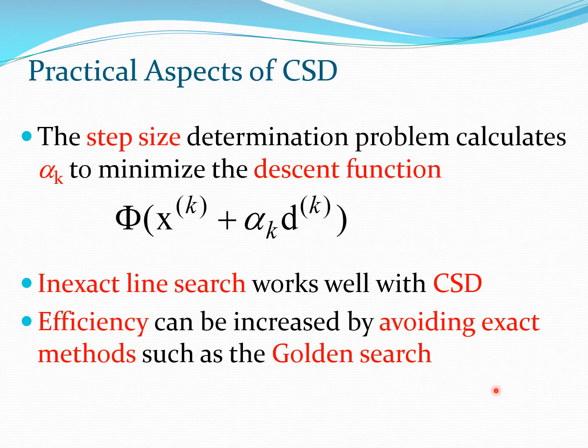Now what you need to do is calculate how much you need to move in this search direction calculated by the QP sub-problem. Again recall the one-dimensional search where this is specified by alpha subscript k, the step size, and this step size has to be calculated by a one-dimensional search method.